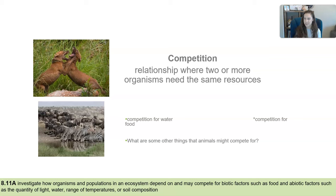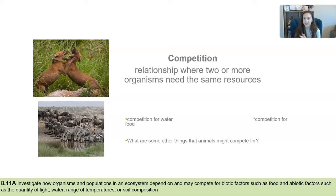Now we're talking about competition — a relationship where two or more organisms compete for the same resource. There's competition for food or water; if many animals or organisms in an ecosystem rely on the same pond for water, there would be a lot of competition surrounding that pond. Animals might also compete for the same food source, the same habitats, or the same mate — anything needed not only to survive but to thrive and create offspring.